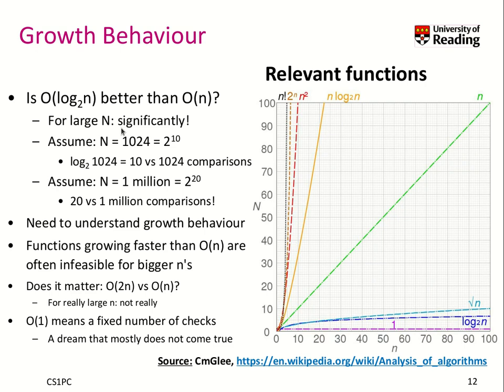It's significantly better. For example, if we have 1024 search elements — which is 2 to the power of 10 — we may need only 10 comparisons with our binary search, while we need 1024 comparisons with our array search.